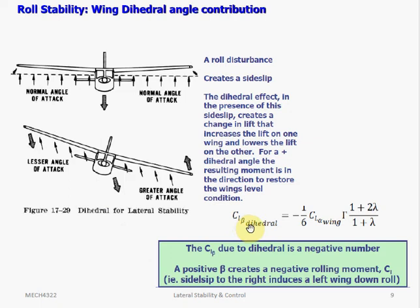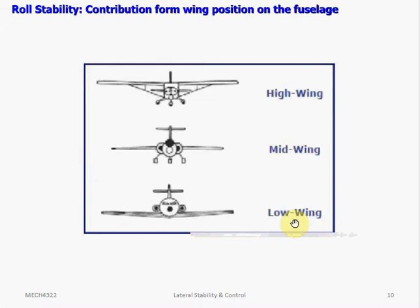The effect of dihedral is to produce a rolling moment tending to return the airplane to wings level flight. The CL_beta contribution from a dihedral wing is a function of the lift coefficient, the dihedral angle, and the wing's taper ratio. Notice that CL_beta due to dihedral is a negative number — if the aircraft experiences a positive sideslip, it will create a negative rolling moment. In other words, if it sideslips to the right, it will induce a left wing down roll.